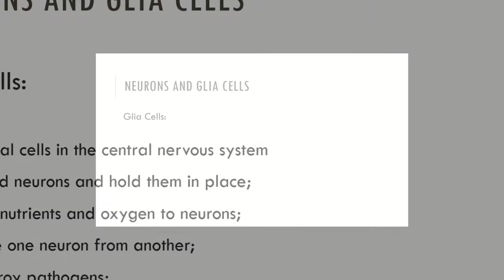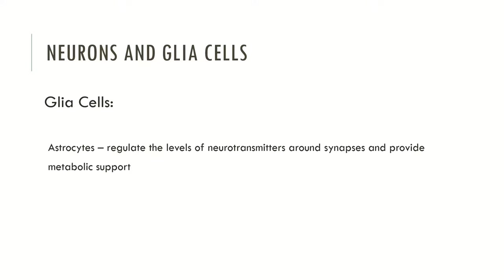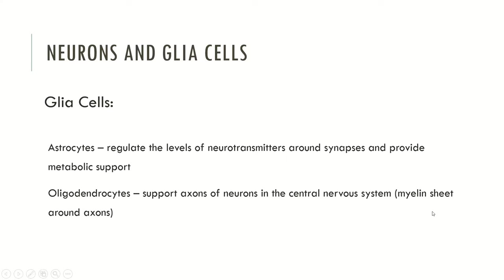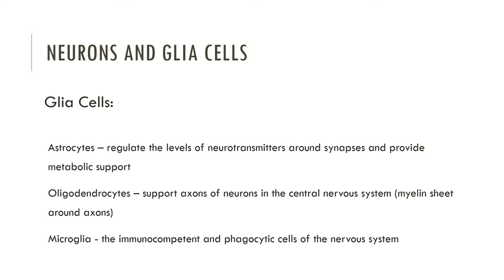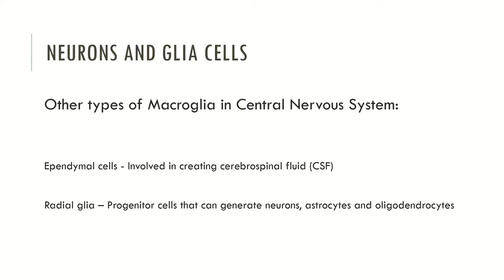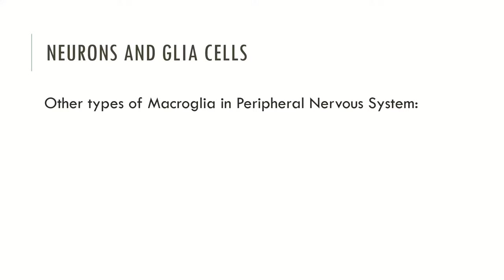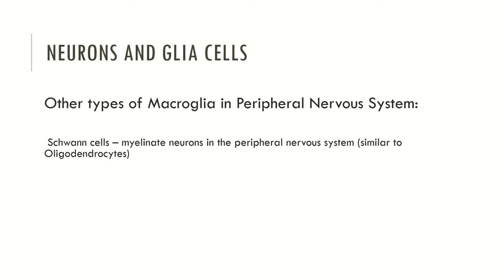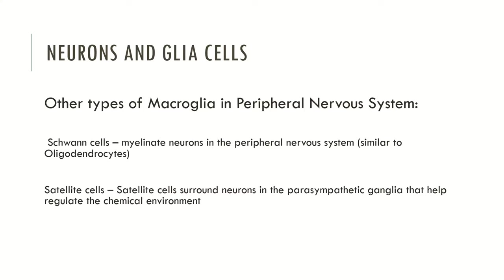There are several types of glial cells. Astrocytes regulate neurotransmitter levels around synapses and provide metabolic support. Oligodendrocytes support axons in the central nervous system. Microglia are the immunocompetent and phagocytic cells of the nervous system. Other macroglia in the CNS include ependymal cells involved in creating cerebrospinal fluid, and radial glia, progenitor cells that can generate neurons, astrocytes, and oligodendrocytes. In the peripheral nervous system: Schwann cells myelinate neurons (similar to oligodendrocytes in the CNS), satellite cells regulate the chemical environment in parasympathetic ganglia, and enteric glial cells are found in nerves of the digestive system.